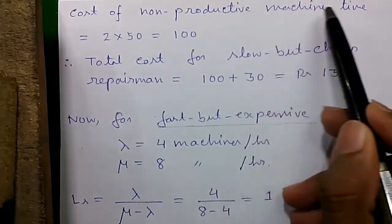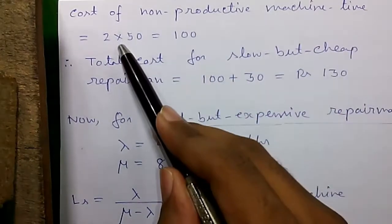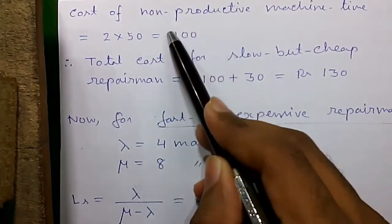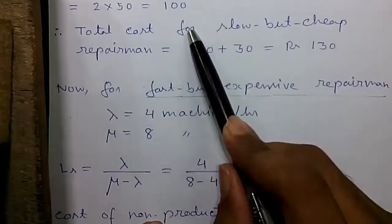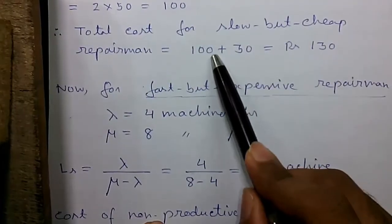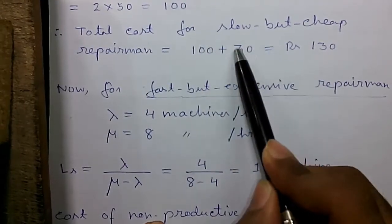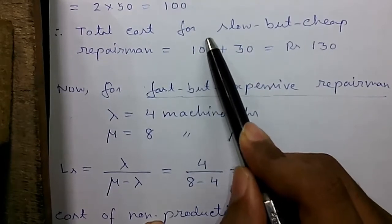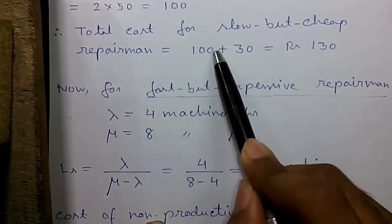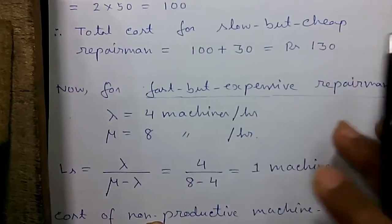Now cost of non-productive machine hour is given by 2 times 50 that's equals to 100 rupees. So the total cost for slow but cheap repairmen equals to his wage rupees 30 plus non-productive machine hours rupees 100 that's equals to rupees 130.